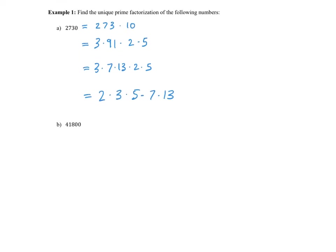So the next number is 41,800. Let's start separating out the tens as much as possible — 418 multiplied by 10 squared, because there are two zeros. Then 418 divided by 2 gives 209, so 418 is 2 times 209. And 209 is the same as 11 times 19.